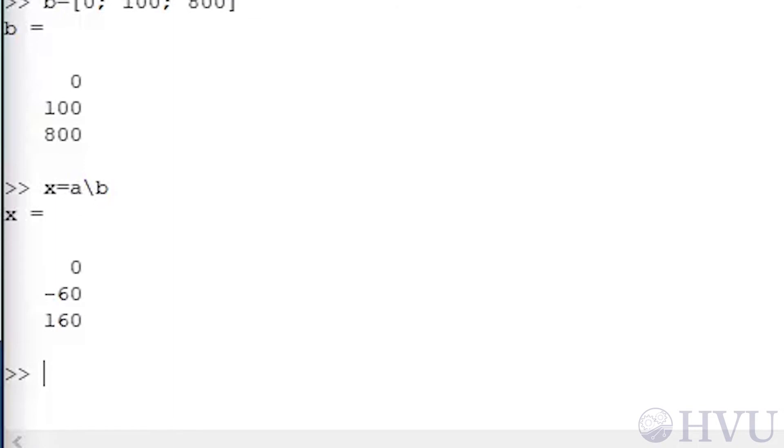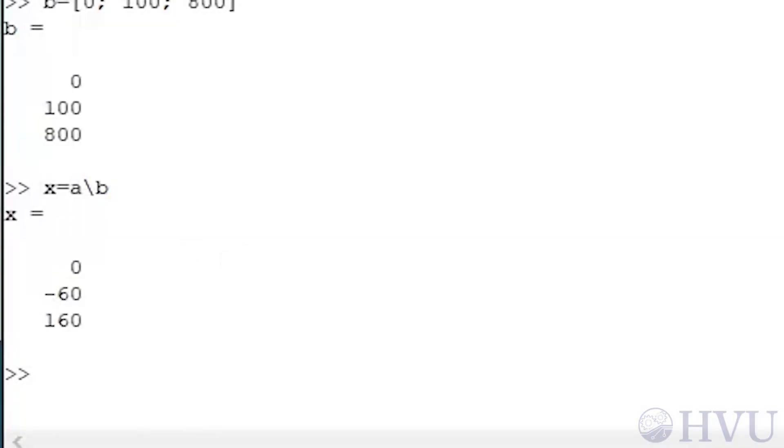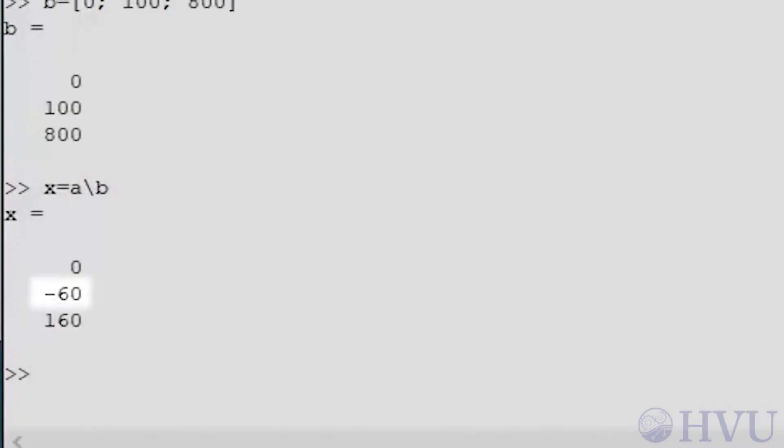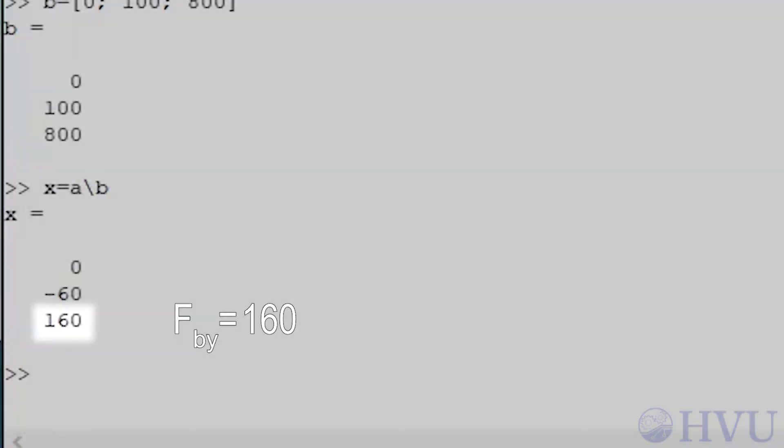The result is X equals zero, negative 60, and 160. The first element of X is FAX, so FAX is equal to zero. FAY is the second element in the vector, so FAY is negative 60. Finally, FBY is positive 160. Keep in mind that Octave doesn't know which element in the vector corresponds to which unknown. We need to keep track of that ourselves.